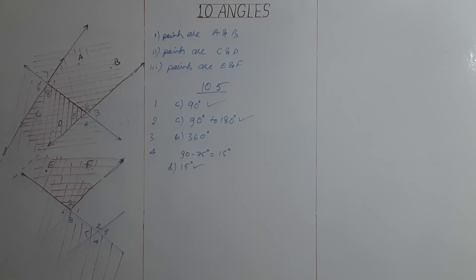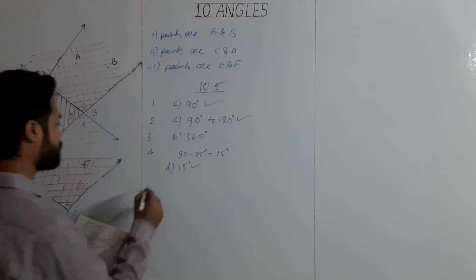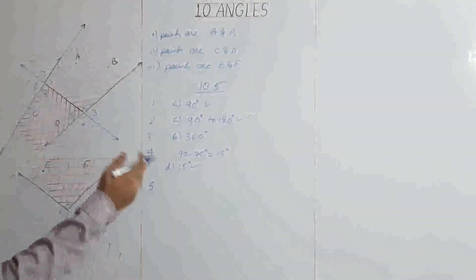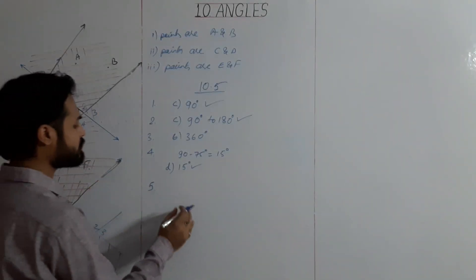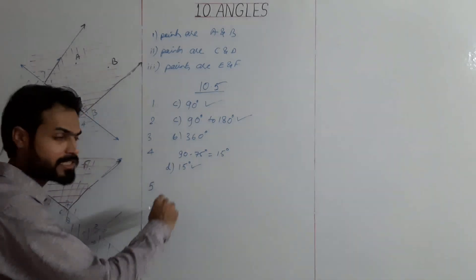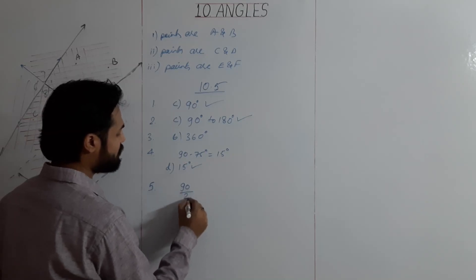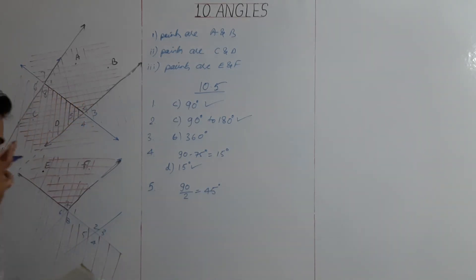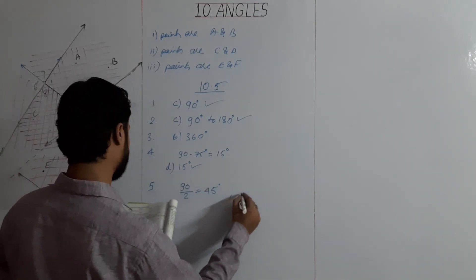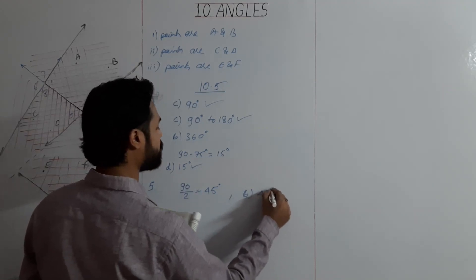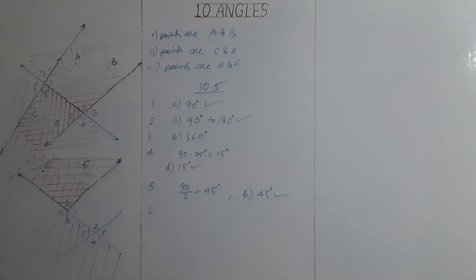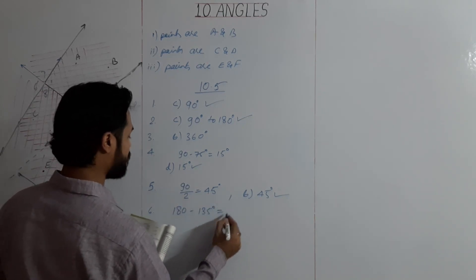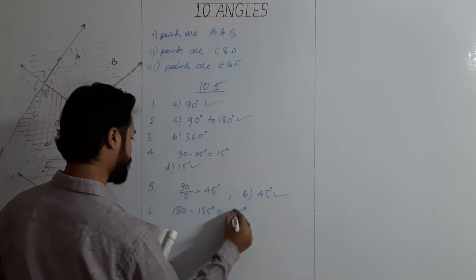Question 5: the angle which equals its complement. Complement means two angles whose sum is 90. If both angles are equal, then each is 90 divided by 2 equals 45 degrees. Answer is B, 45 degrees. Question 6: the supplement of 135 degrees — 180 minus 135 equals 45 degrees. Answer is A, 45 degrees.